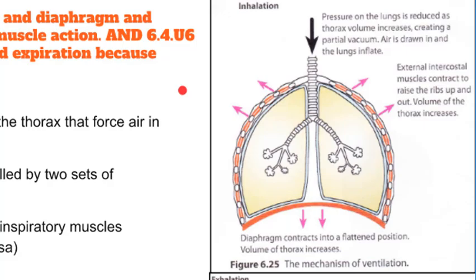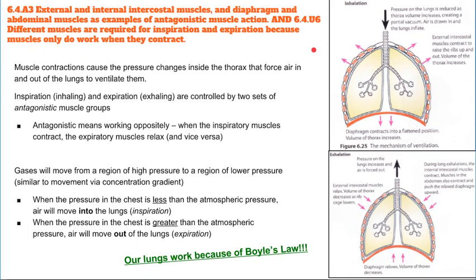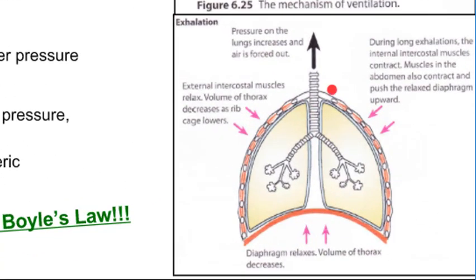It's important to note that the muscles work antagonistically — meaning they work oppositely. The inhalation muscles are different from those that help us exhale. During exhalation, the internal intercostal muscles contract while the external intercostal muscles relax. This moves the ribcage down and in. At the same time, the abdominal muscles contract, pushing the diaphragm up and back into its dome shape. Both of these contractions decrease the volume of the thorax — essentially squeezing it — which increases the pressure.